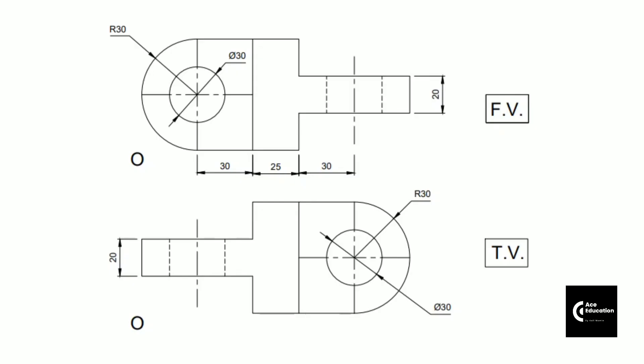So friends, these are the two views that we have been given. One is front view and second is top view. The origin points are also mentioned in the front view and top view. So when we are going to draw the front view, that will be coming on the right hand side of the origin, as the origin is given on the left hand side.